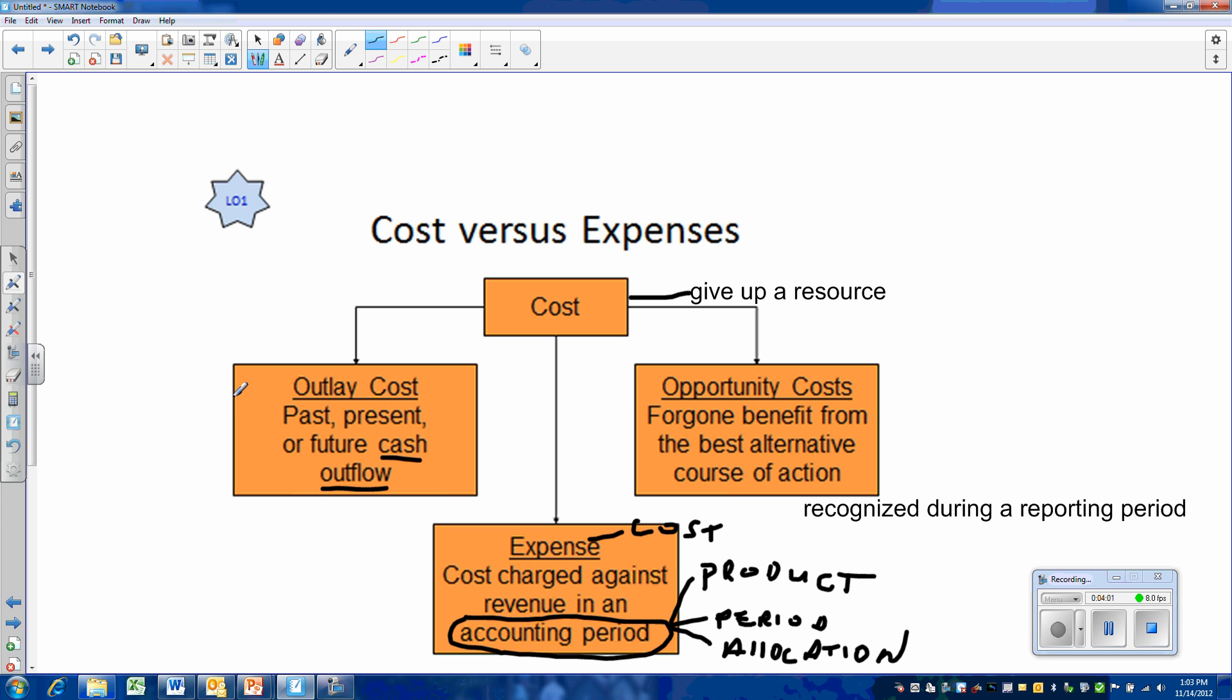Now, there are a few outlay costs that never result in expense. The purchase of land. When you purchase land, you're going to have to lay out cash, but since the land is not depreciated, the cost of the land will not be allocated over a time period and we will never have an expense recognition.